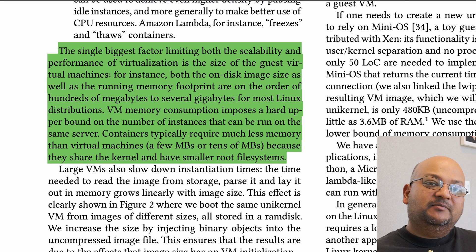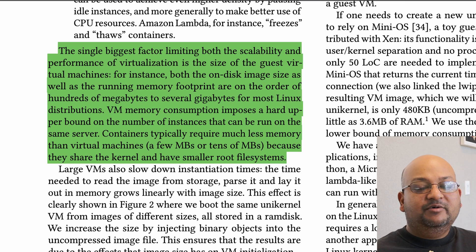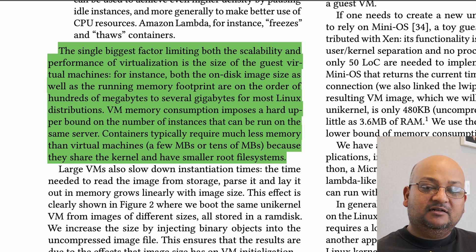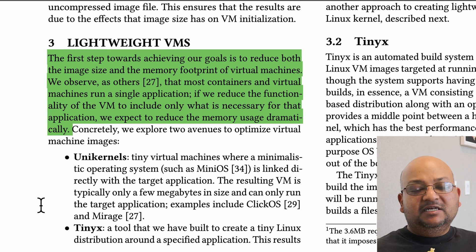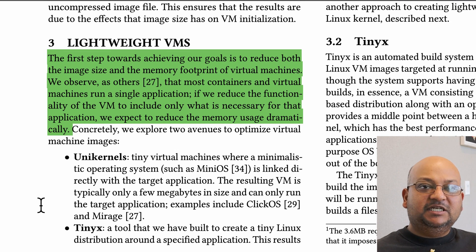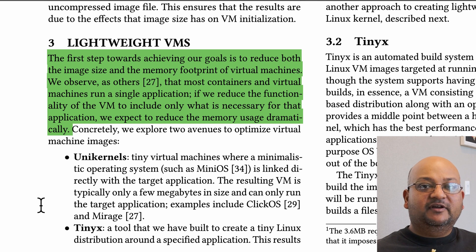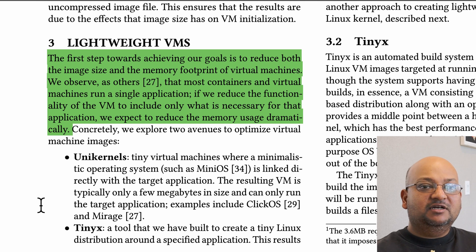One of the biggest factors that makes virtual machines heavyweight is the size of the guest operating systems. Even a small Linux distribution can run into hundreds of megabytes, maybe even gigabytes. Containers don't have the same problem because they share the underlying kernel memory and their root file systems can be pretty small. This means the biggest thing you can do to make virtual machines lightweight is to strip down the guest operating system. Most virtual machines are designed to run one specific application or workload, and if you strip down the guest to just what that application needs, you can make it pretty small.